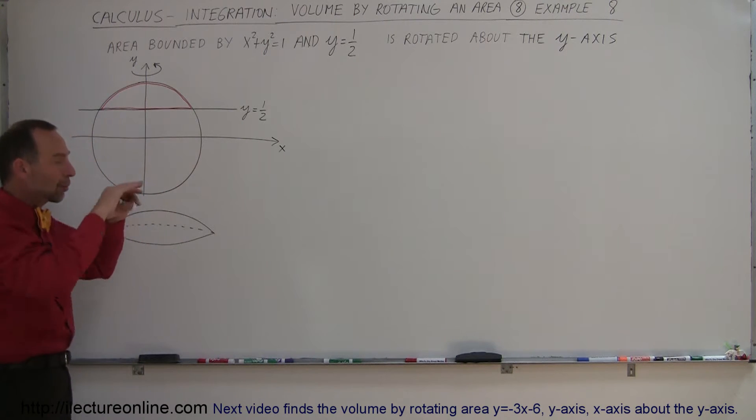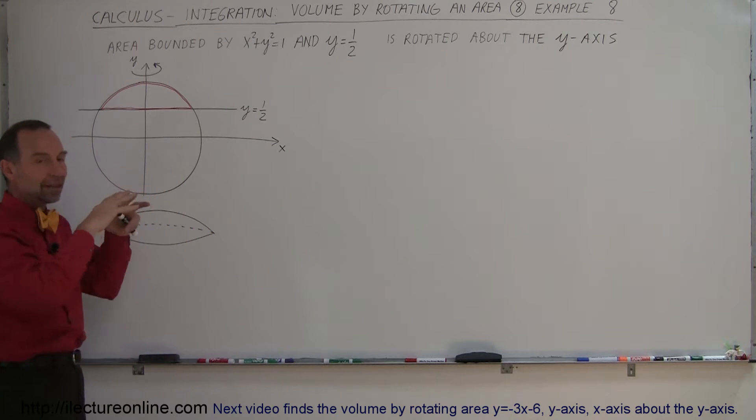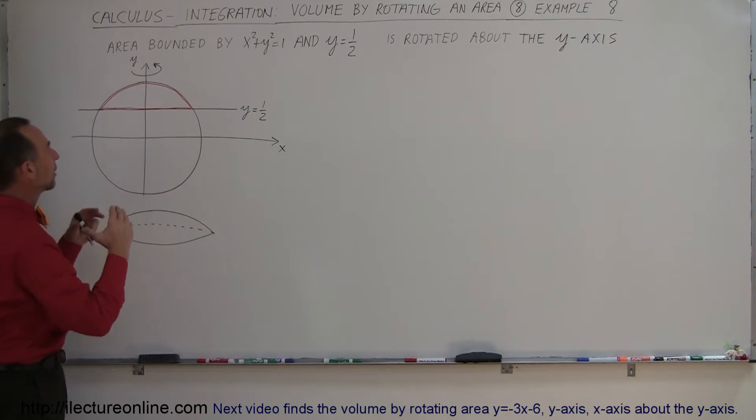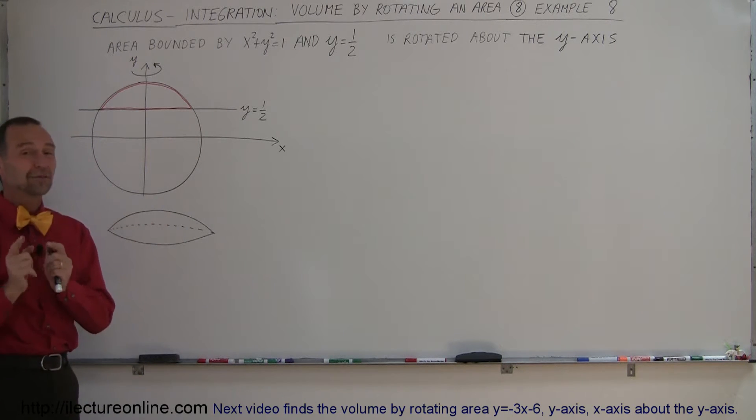What that does is it creates kind of like a dome shape. I'll try to draw it right here. Here's the top of this sphere, because what you get when you take the whole circle and rotate it around, you get a sphere. It's basically cutting off the top of the sphere, and we're trying to find the volume of that.